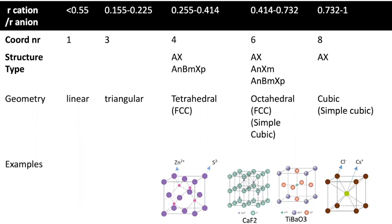The geometry can go from linear to triangle, tetrahedral, octahedral, and cubic. It can be FCC or a simple cubic structure. Some of these examples we can see here are zinc blende that has a coordination of 4.